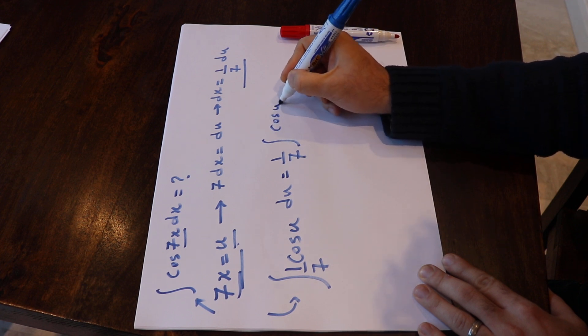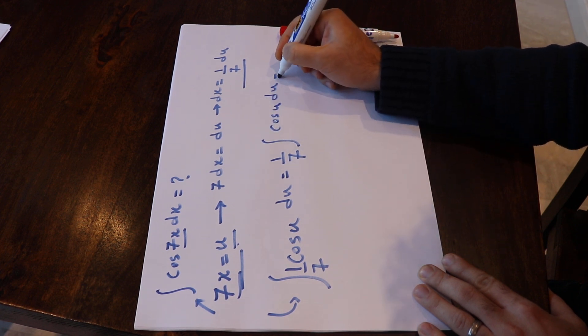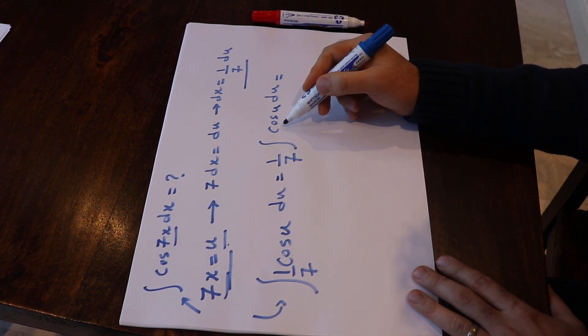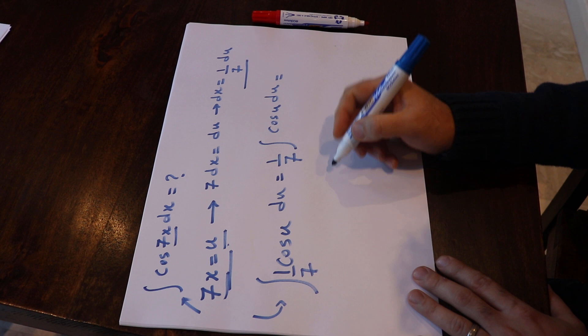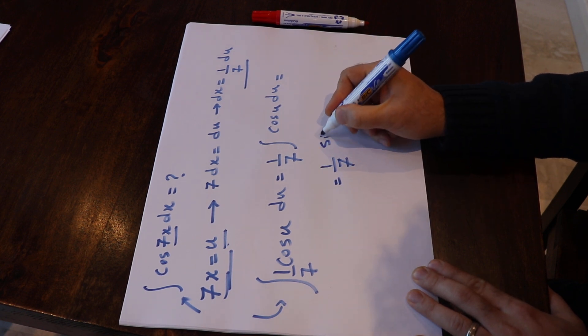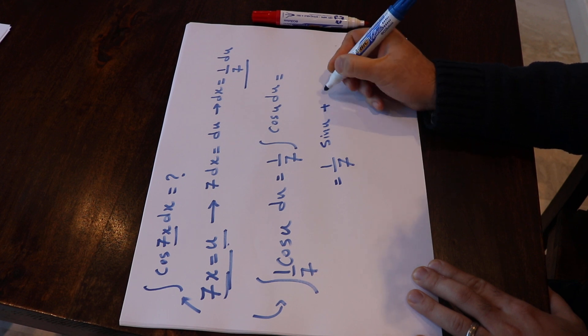And we know from trigonometry that integral of cosine u du equals sinus u plus c, the constant.